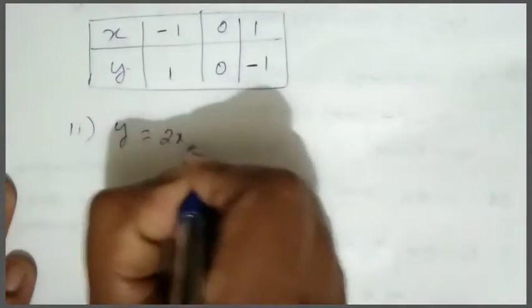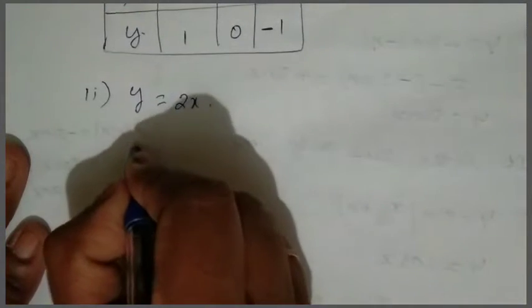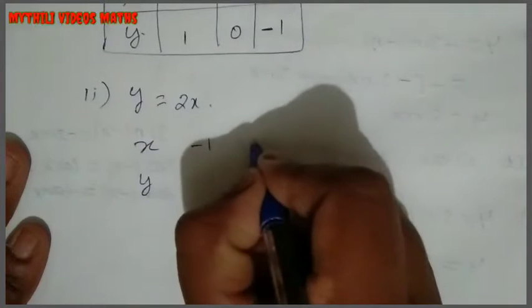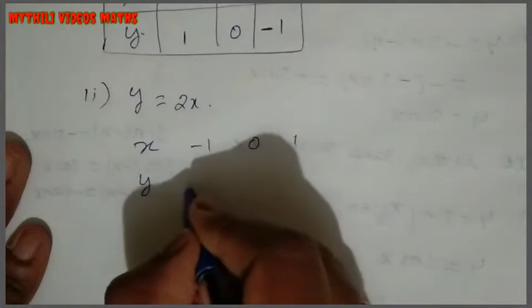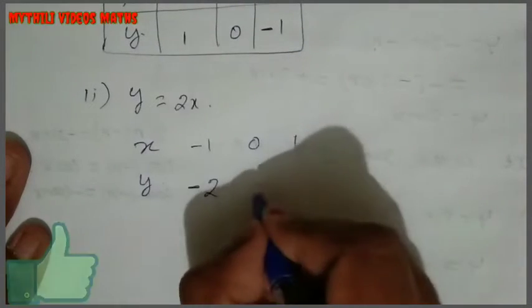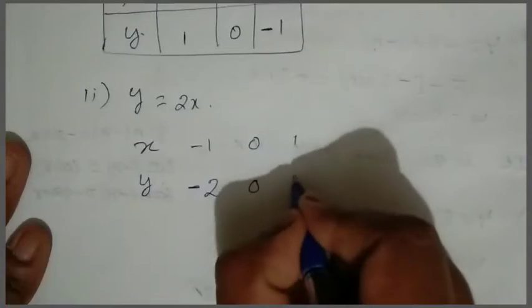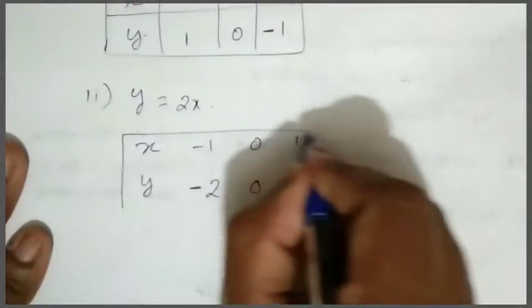So for y = 2x, let x = -1, 0, 1. This is simple. So if y: put x = -1, y = -2. Put x = 0, y = 0. Put x = 1, y = 2. So now we make the table for the next line.